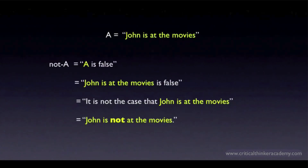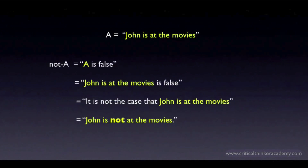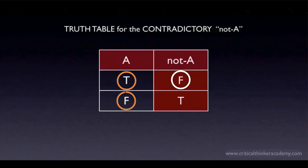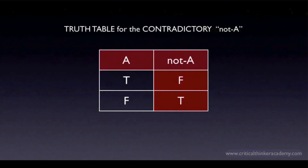For simple claims like this, it's not too hard to find a natural way of expressing the contradictory. For compound claims — like conjunctions, disjunctions, or conditionals — finding the contradictory isn't so simple. Sometimes we have to revert to more formal language to make sure we're expressing the contradictory accurately. The truth table for the contradictory is simple: whenever A is true, not A is false, and vice versa. The definition is simple, but the concept is important and isn't trivial when looking at real-world arguments involving more complex claims.